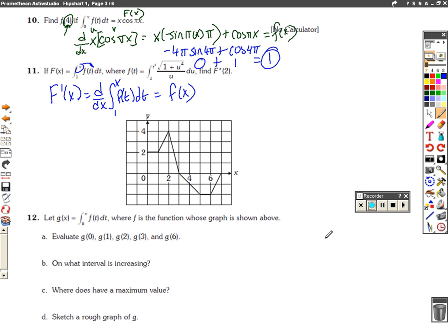Alright, so I actually misread this. I'm picking back up at 11. This is f double prime of 2. Let me just write that bigger. Big f double prime of 2.